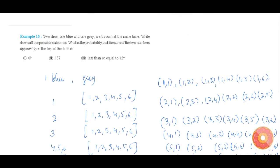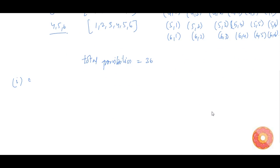Now let us find the probability that the sum of the two numbers appearing on the top of the dice is eight. That is our first case. For the sum to be eight, the possible combinations are: (2,6), (3,5), (4,4), (5,3), and (6,2) — where blue is the first element and grey is the second.